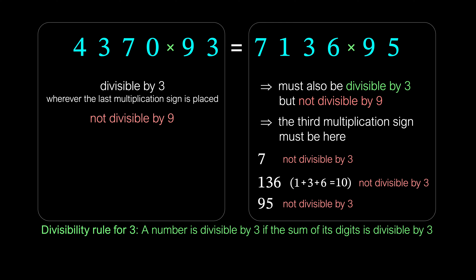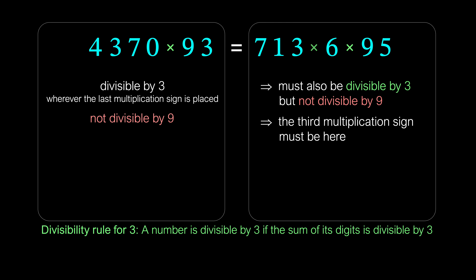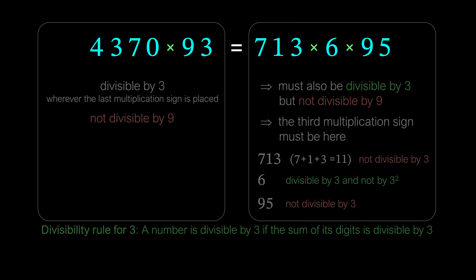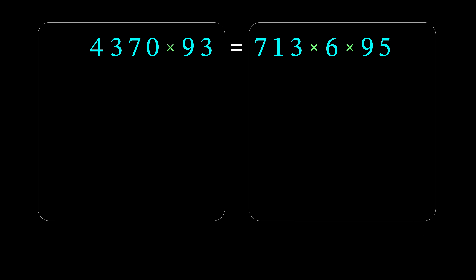Therefore, there is only one option left: place the multiplication sign between 3 and 6. Then the number on the right is divisible by 3 because 6 is divisible by 3. At the same time, the number on the right is not divisible by 9, because the sum of the digits of 713 equals 11 (not divisible by 3, so 713 is not divisible by 3), 6 is divisible by 3 but not by 9, and 95 is not divisible by 3. So, we have placed all 3 multiplication signs and proven that they must indeed be placed there, with no other valid options.